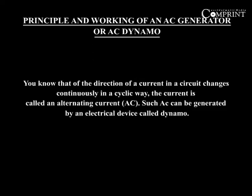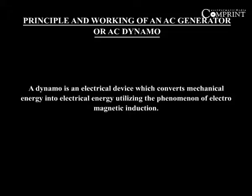Principle and working of an AC generator or AC dynamo. If the direction of a current in a circuit changes continuously in a cyclic way, the current is called an alternating current. Such AC can be generated by an electrical device called a dynamo. A dynamo is an electrical device which converts mechanical energy into electrical energy utilizing the phenomenon of electromagnetic induction.